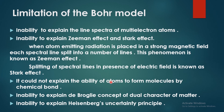The third limitation: he could not explain the ability of atoms to form molecules by chemical bonding. He could not explain the stability of atoms to form molecules. He could also not explain the dual character of matter — the de Broglie concept — and he could not explain it.